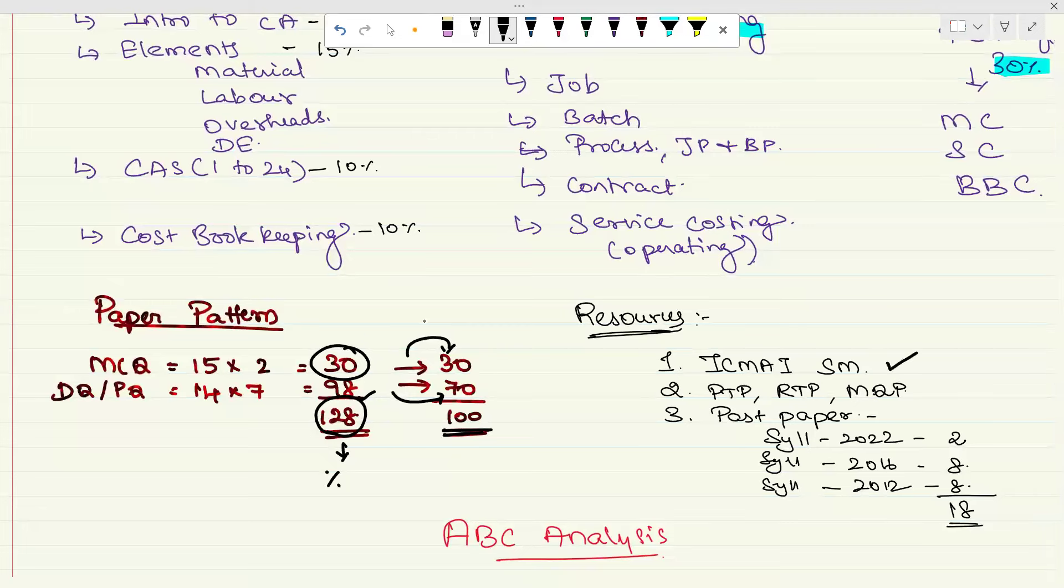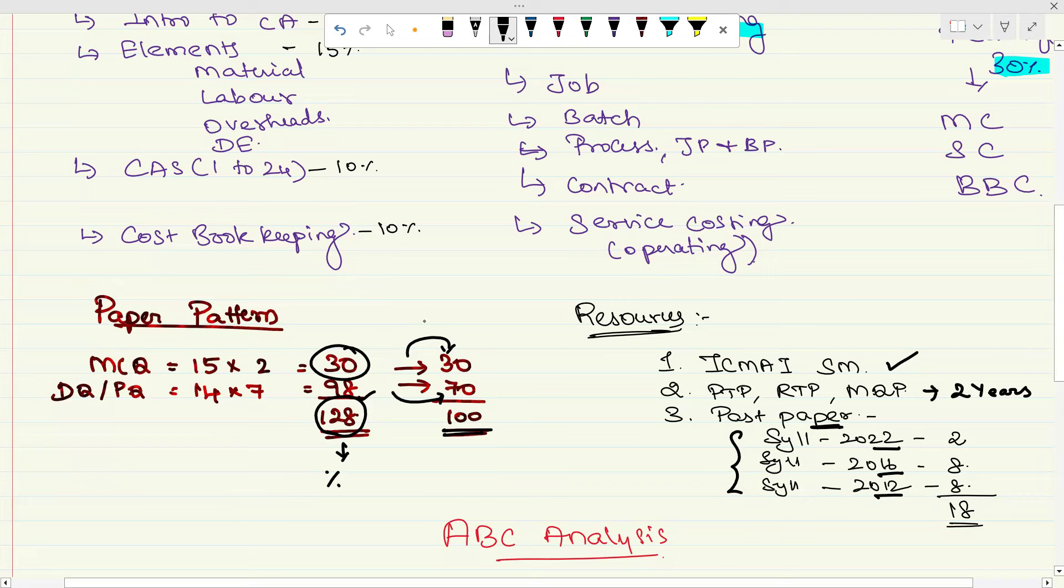What are the resources? I'm going to use ICMA study material first priority, then postal test paper, then RTP revision test paper, and model question papers of last two years. Not two syllabus, it is two years past papers of three syllabus: syllabus 2022, syllabus 2016, syllabus 2012. This will be helpful and easy for those who are repeaters. For those appearing first time, focus on syllabus 22 then syllabus 16. If you got time, go for syllabus 12.